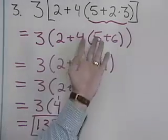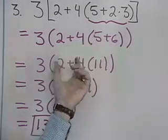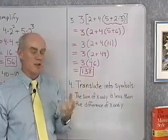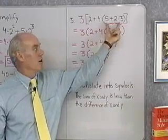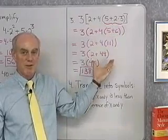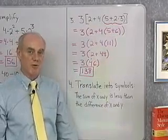The rule for order of operation says that we always start inside the innermost parentheses first. So I want to start inside the innermost parentheses and then work my way out, simplifying according to my rule for order of operations.